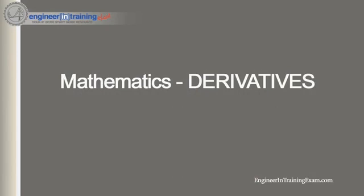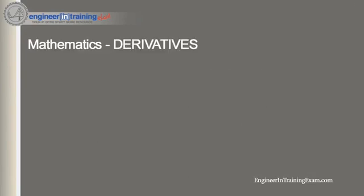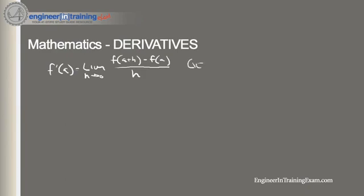Hey, what's going on? It's Justin Dickmeyer from EngineerAndTrainingExam.com and in this video we will review your understanding of the derivative. A derivative is the instantaneous rate of change of a function. When finding the equation of tangent lines, the slope of the curve f of x at the point a, f(a), is equal to the derivative of f at a. The instantaneous rate of change of a function f of x when x is equal to a is given by the general formula: f prime of a equals the limit as h goes to zero of f(a plus h) minus f(a) divided by h.